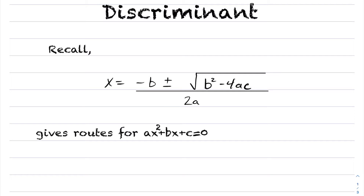In today's lesson, we're going to be talking about the discriminant. Recall that for a quadratic of the form ax² + bx + c, when you set that equal to zero, we found that the quadratic has roots at negative b plus or minus the square root of b² minus 4ac, the whole expression divided by 2a. This was the quadratic formula, if you recall.